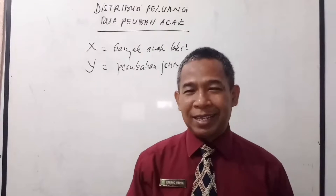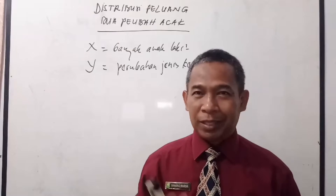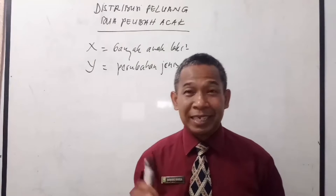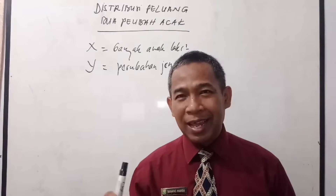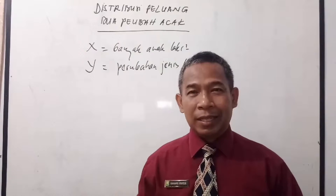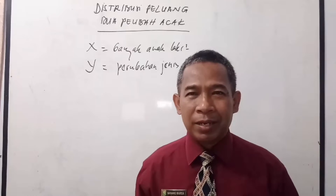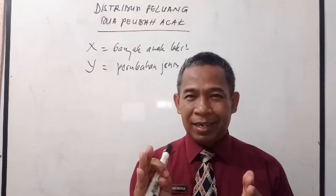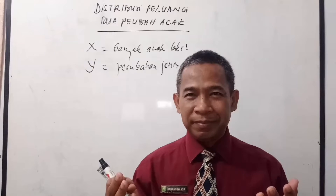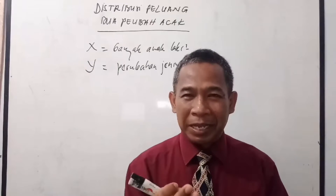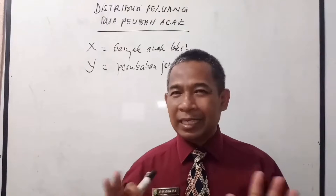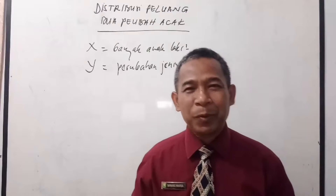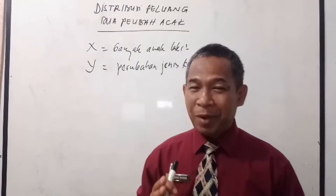Banyaknya anak laki-laki bisa tiga, dua, satu, dan bisa juga tidak ada. Sehingga X kecilnya bisa 0, 1, 2, dan 3. Peubah acak Y adalah banyaknya perubahan jenis kelamin. Pada saat ketiga-tiganya laki-laki (LLL), tidak ada perubahan jenis kelamin, sehingga Y kecilnya adalah nol, karena tidak terdapat perubahan jenis kelamin.